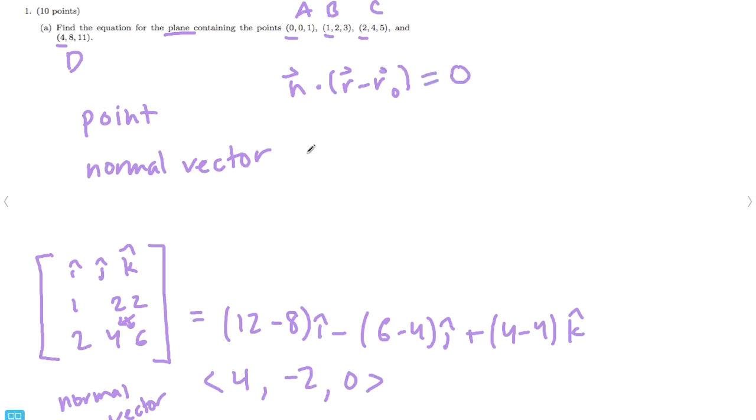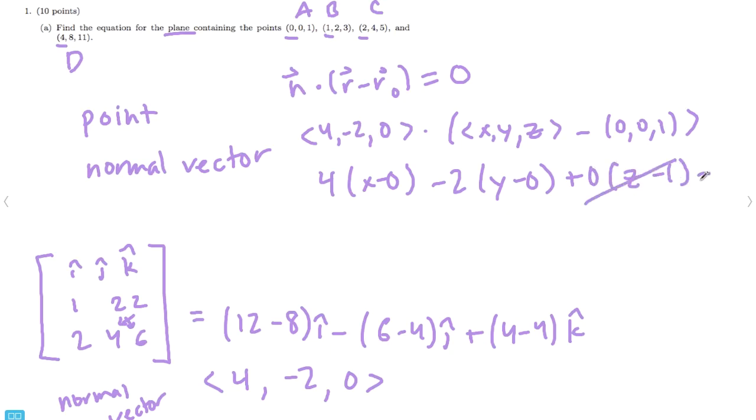So, we can substitute this for our normal vectors, 4, negative 2, 0, times our position, our general position vector is x, y, and z. And, if we're picking any point, I would just go for the easiest point, which is a. Okay, so, minus 0, 0, 1. And, then we just distribute, so 4 times x minus 0, minus 2 times y minus 0, plus 0 times z minus 1. So, this just goes away.